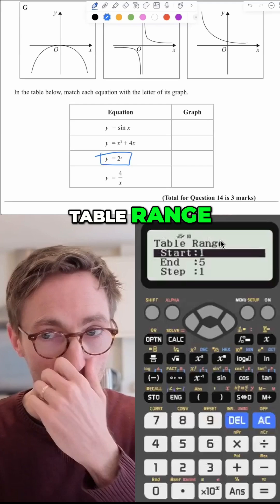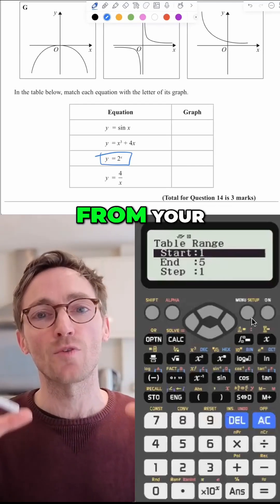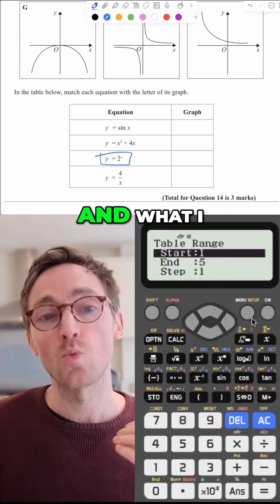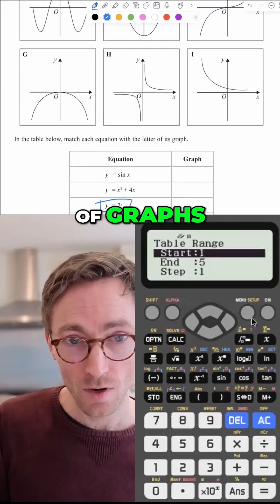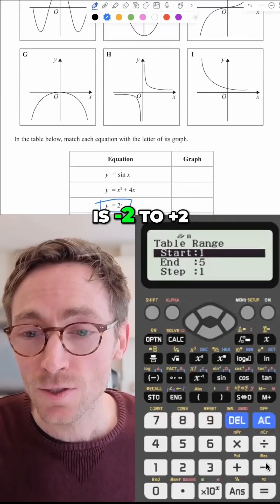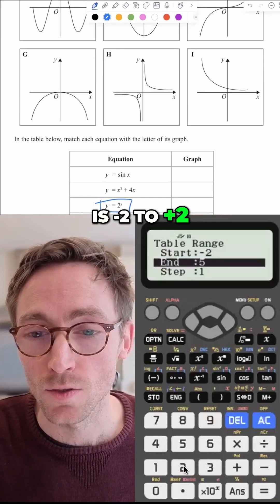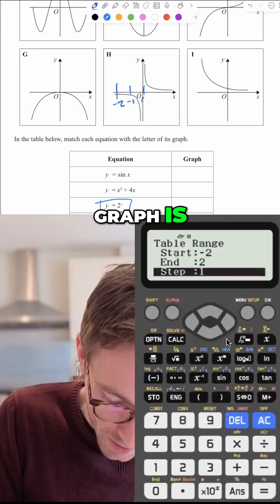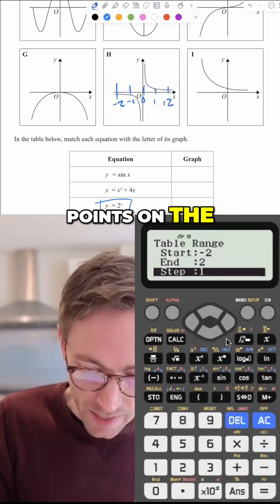They've asked for the table range. You're building a table from your calculator and you're telling it where you want it to start and end. These are the x values. What I recommend for these types of graphs is minus two to plus two with a step one. Essentially what this is doing is finding out where the graph is at each of these points on the x axis.